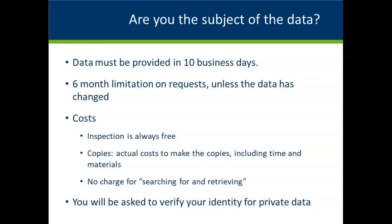If you are the subject of the information, you have slightly different rights than requesters who want public data. There are differences in time limits and copy cost charges. Another important difference is that if you ask for data about yourself, the government does not have to provide you the same data within a six-month period unless the data somehow changes. For instance, if you are a government employee and you want your personnel file, you can have it — but if you ask for it again within that six-month period and nothing has changed, your employer does not have to provide you access. However, if you have had a performance review in the interim and want a copy, the government would have to provide it even within those six months. Note also that if you want access to private data about yourself, you will need to verify your identity, which differs from requesters seeking public data.